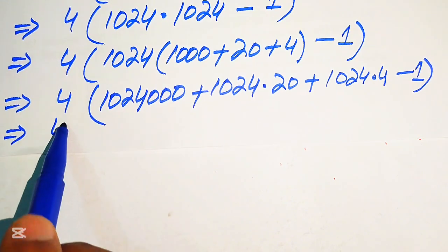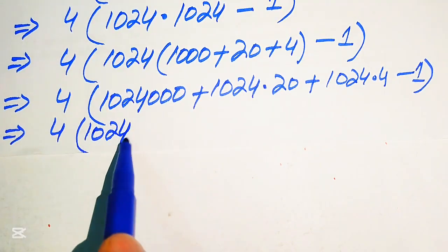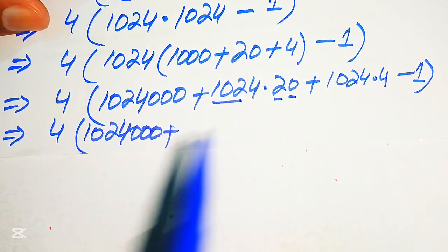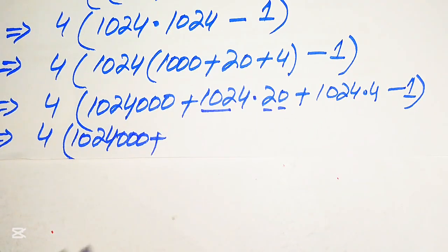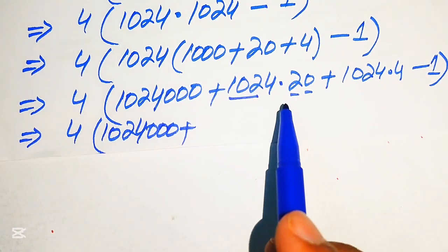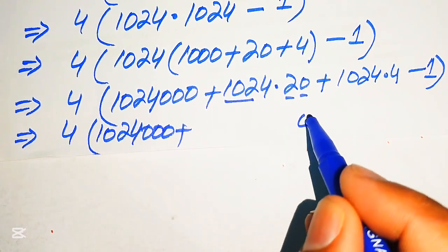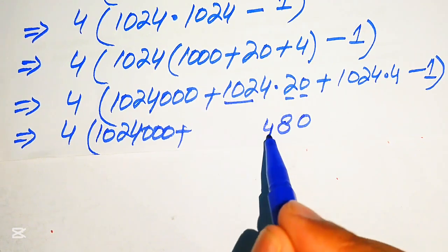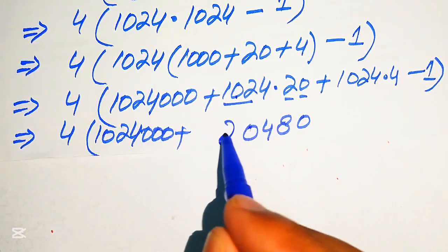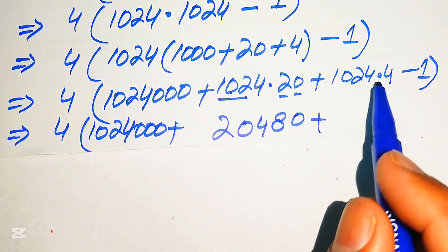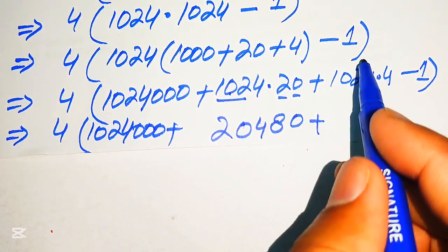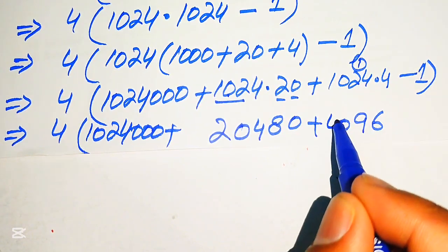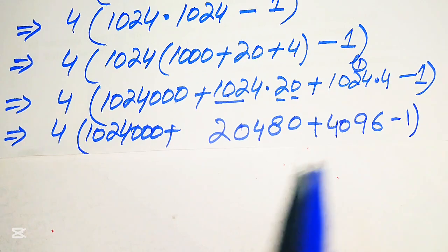Multiplying 1024 by 1000 gives 1024000. Multiplying 1024 by 20: 0 times the number gives 0; 2 times gives 2 4s are 8, 2 2s are 4, 2 0s are 0, 2 1s are 2. Multiplying 1024 by 4: 4 4s are 16 write 6 carry 1; 4 2s are 8 plus 1 is 9; 4 0s are 0; 4 1s are 4. And we have minus 1.